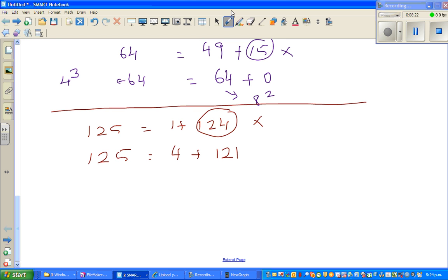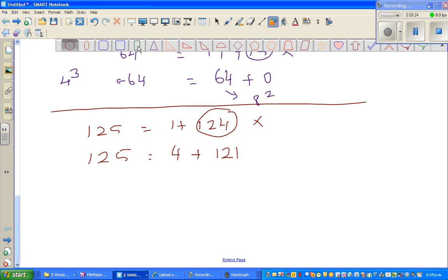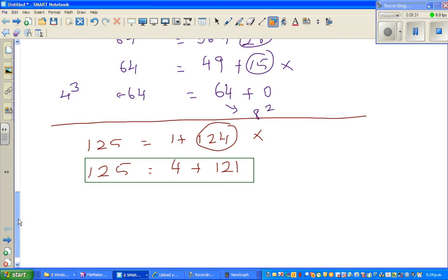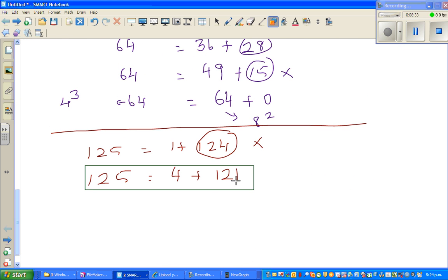I want you to stop now and see whether any bells are ringing. Does this equation satisfy our condition? What do you know about 121? 121 is 11 squared. And 2 squared is 4. And 5 cubed is 125. So we can write 2 squared plus 11 squared is equal to 5 cubed.